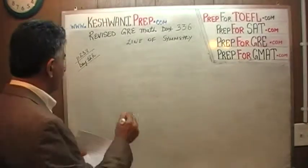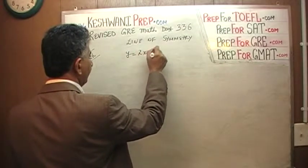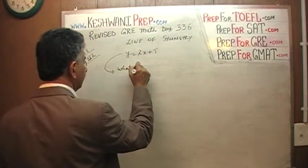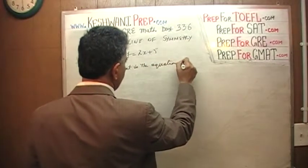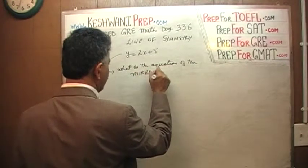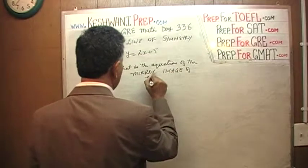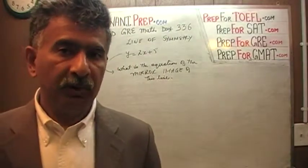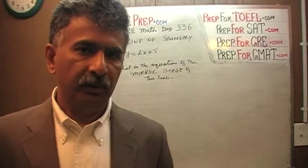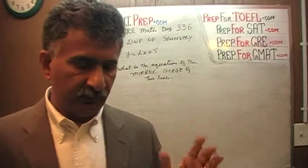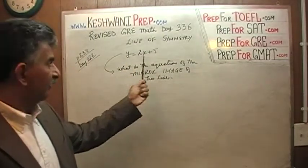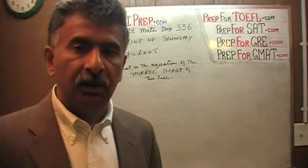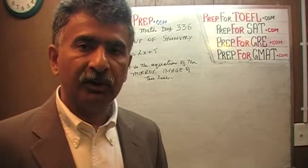We are given an equation: y is equal to 2x plus 5. What we are being asked is: what is the equation of the mirror image of this line, and how do we show it on the graph? We have to show the original line first, before we worry about showing the mirror image. Then we show the mirror image, and once we have done that, we can figure out how it reflects along what is known as the line of symmetry.